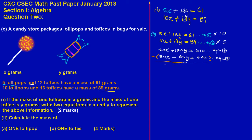The positive 65y in the bracket becomes negative 65y, so we get 120y − 65y = 55y. For the constants, the positive 445 in the bracket becomes negative 445, so we get 610 − 445 = 165. Therefore, 55y = 165.